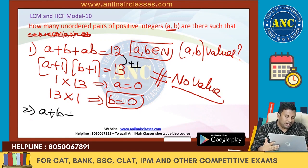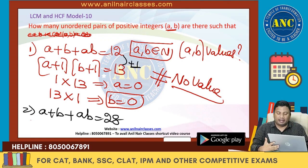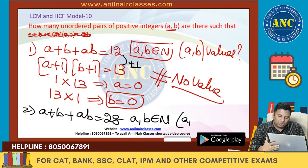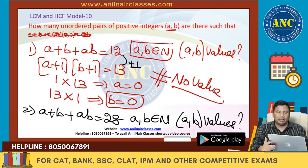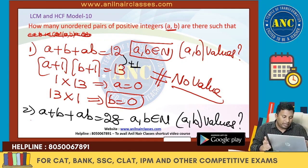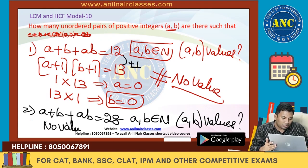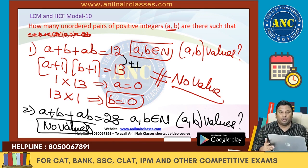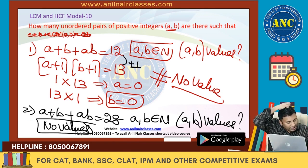Second question: A plus B plus AB equivalent to 28. A and B are natural numbers. How many values will AB take? 28 plus 1 is 29, which is a prime number. So the answer is no values. Is this clear to everyone?